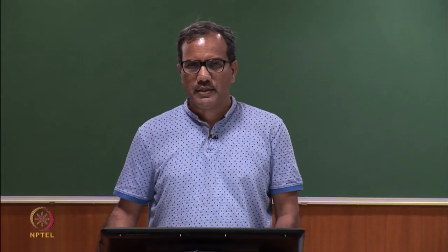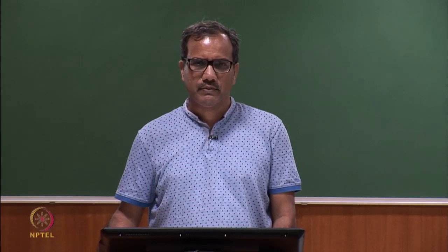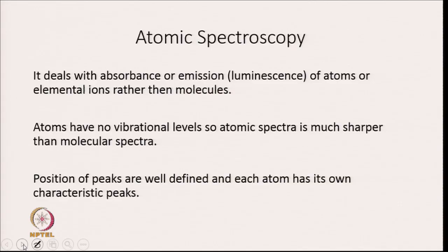Hello students, welcome to lecture 16 of this course. Atomic spectroscopy deals with absorbance or emission of atoms or elemental ions rather than molecules. Since atoms have no vibrational levels, atomic spectra are generally much sharper than molecular spectra. The positions of peaks are well-defined and each atom has its own characteristic peak, which is the main advantage of atomic spectroscopy.